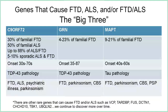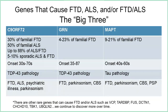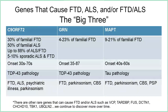GRN and MAPT are two other genes that have been implicated in a significant amount of familial FTD. They have associated features including Parkinsonism and variants such as corticobasal syndrome and progressive supranuclear palsy. Knowing which gene is causing somebody's disease can help us make predictions about what symptoms they might experience, though it doesn't tell us exactly when symptoms will develop or whether a specific symptom will ever occur. It does provide helpful information for families and potentially for clinical trial eligibility.